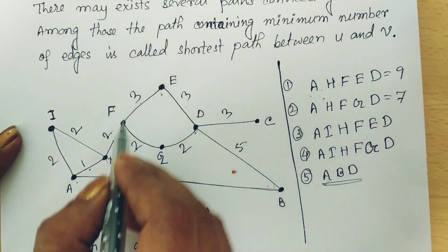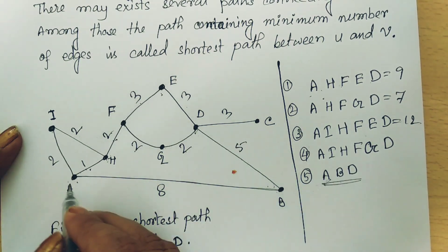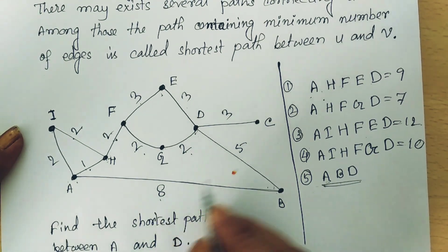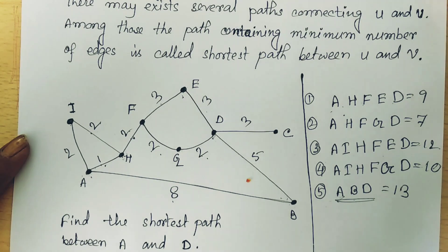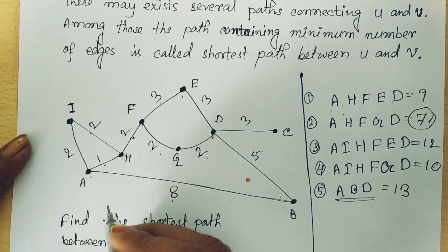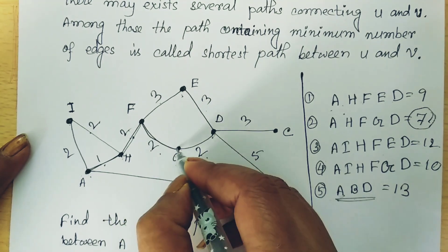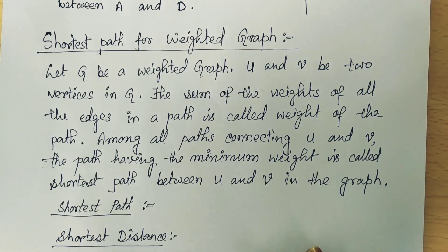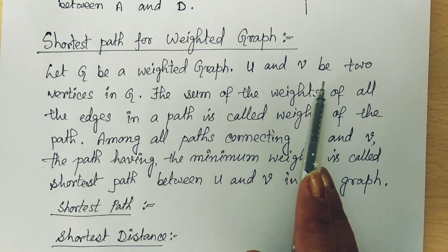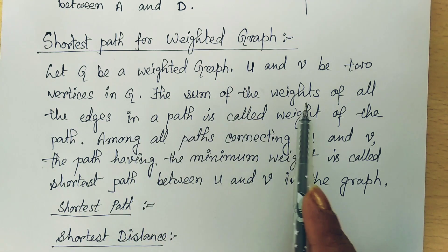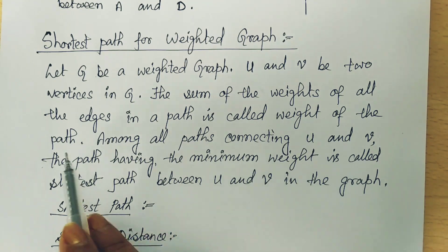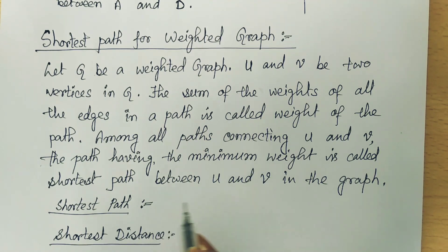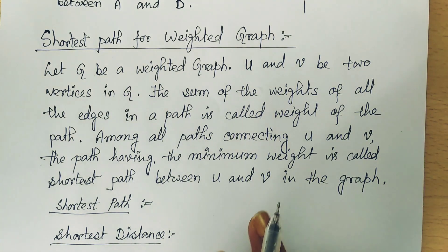The third path has total weight 12, and another has total weight 10, and another is 13. After calculating all weights, the minimum weight is 7. So the path with weight 7 is the shortest path. Formally, let G be a weighted graph and U and V be two vertices. The sum of edge weights in a path is called the weight of the path, and the path with minimum weight is the shortest path between U and V.